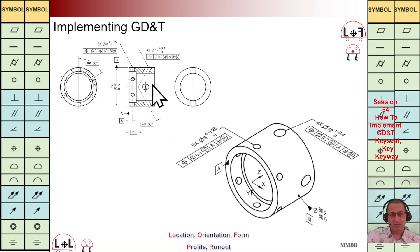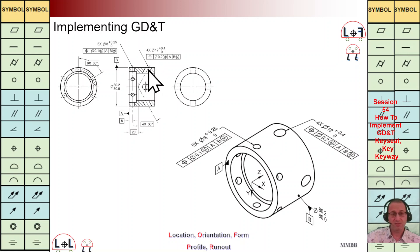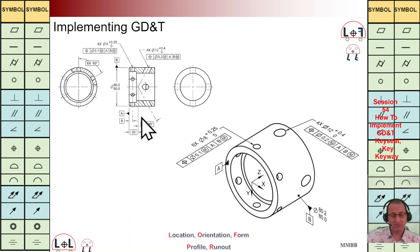As you can see, by using this positioning control we are going to control the position of these four holes with respect to A, and also the angle of that with respect to B.